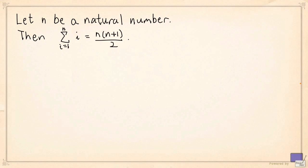We're going to prove the following statement. Let n be a natural number. Then the sum of i, as i ranges from 1 up to n, equals n times n plus 1 divided by 2.